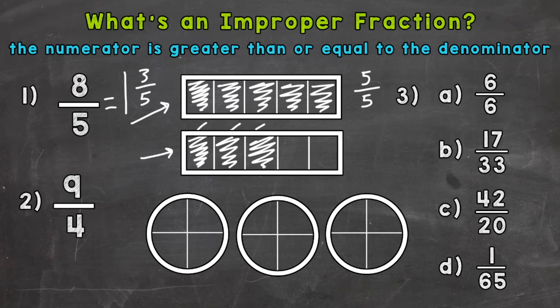So you can see that we have 1 whole rectangle filled in, and then 1, 2, 3 fifths. So 8 fifths equals 1 and 3 fifths. We can see that that has a value greater than 1 whole — it's an improper fraction. So let's take a look at another example. For number 2, we have 9 fourths. The numerator, the top number, is greater than the denominator, the bottom number. So we have an improper fraction, and this improper fraction's value is going to be greater than 1 whole.